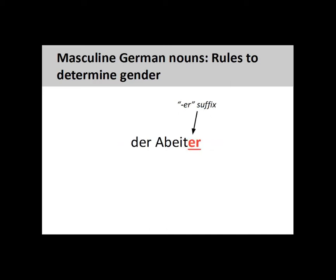Nouns ending in -ER that are derived from verbs are masculine. For example, the noun 'Arbeiter' (worker) is derived from the German verb 'arbeiten' (to work).